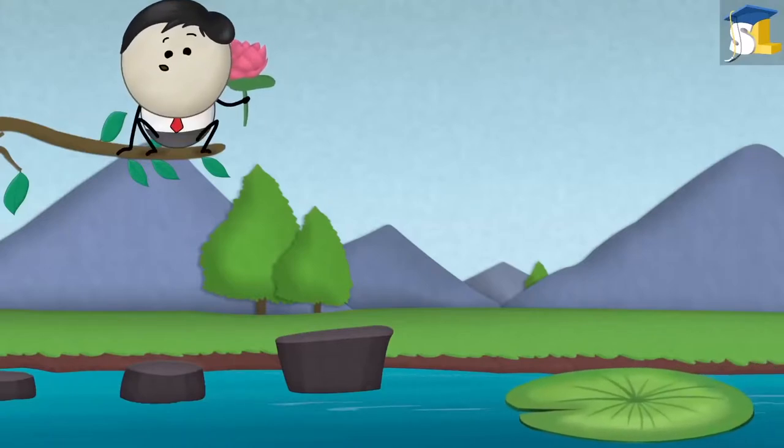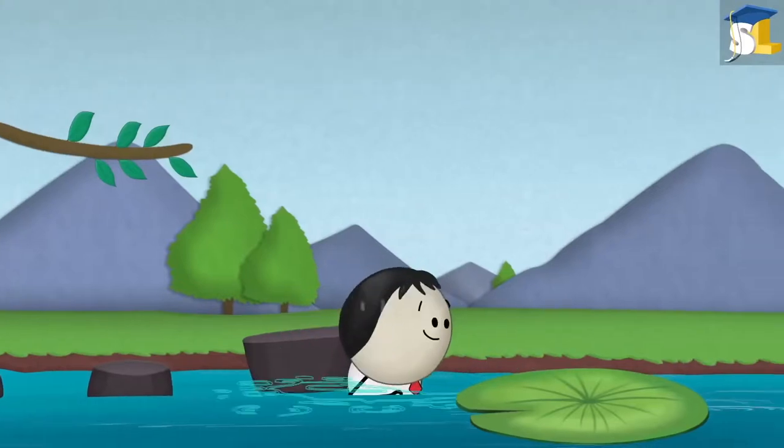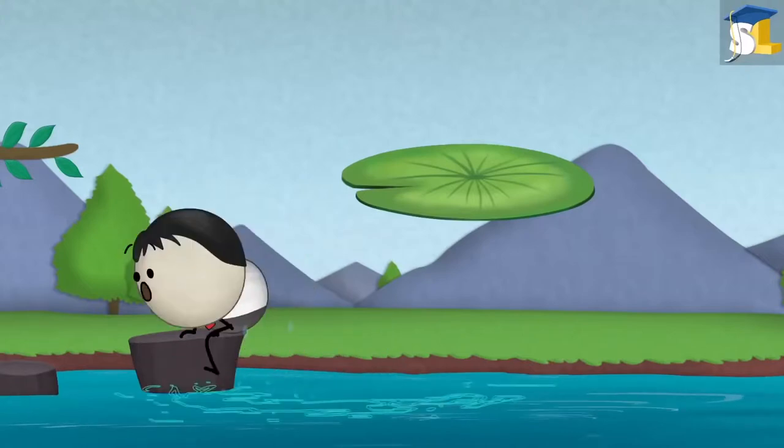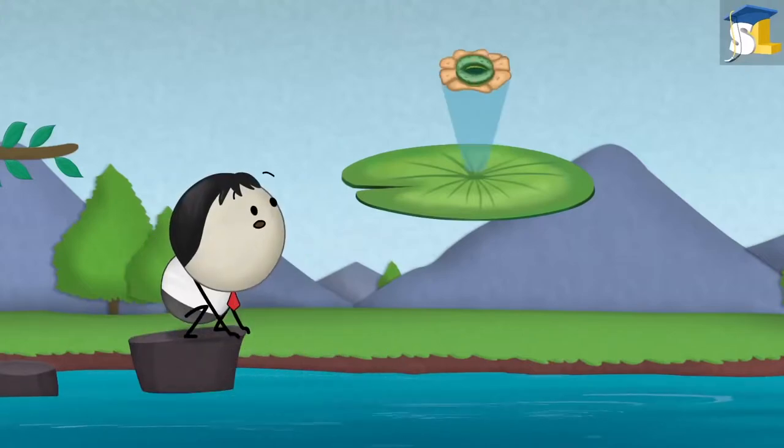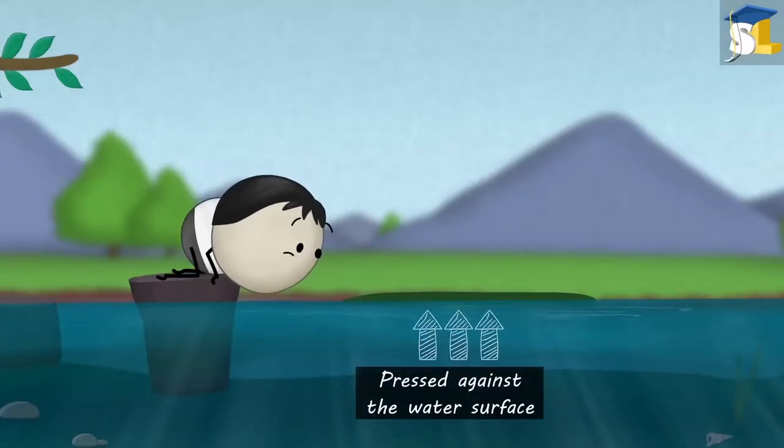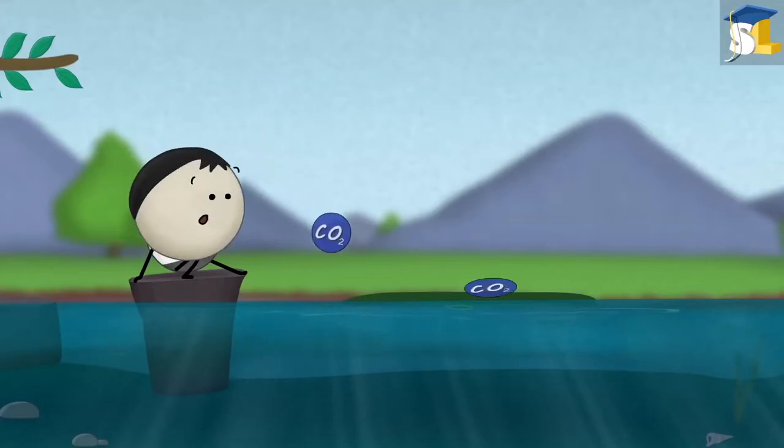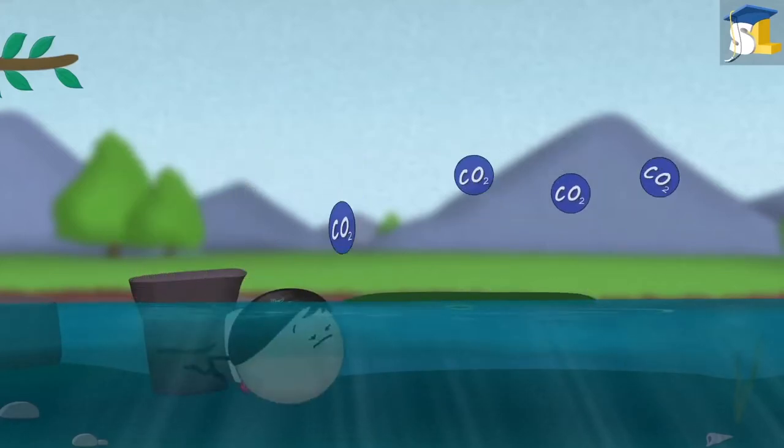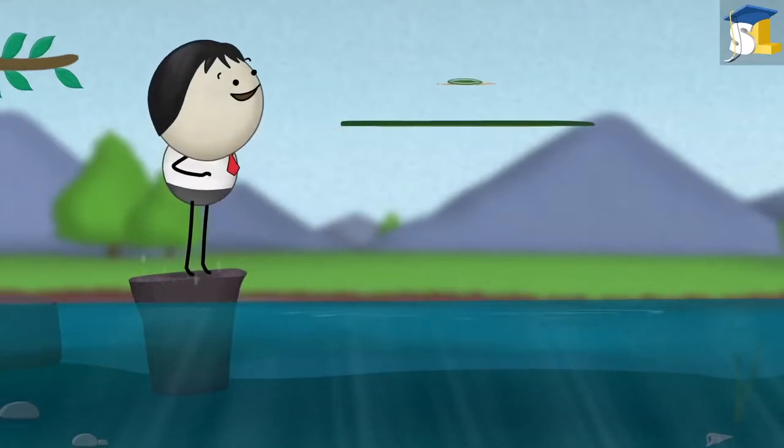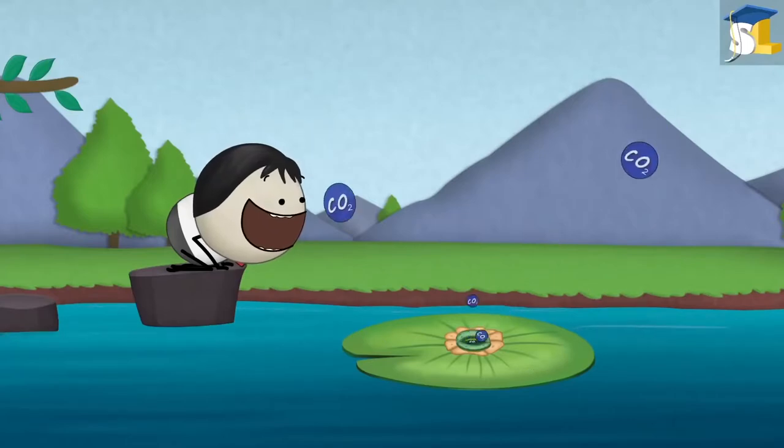We know that the leaves of waterlilies float. Hence, if the leaves of waterlilies would have stomata on their lower side, then they would have been pressed against the water surface. As a result, the stomata would not be able to take in carbon dioxide from air. Thus, the leaves of waterlilies have stomata on their upper side, where they easily get air and usually do not come in contact with water.